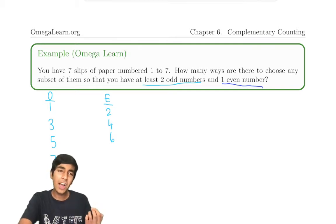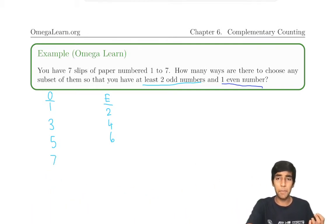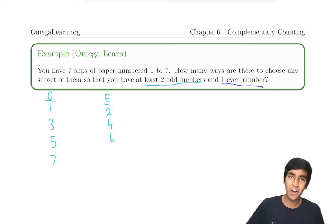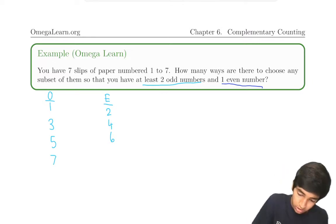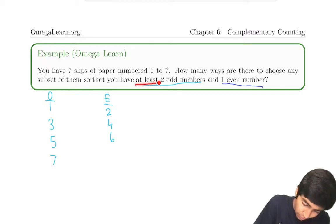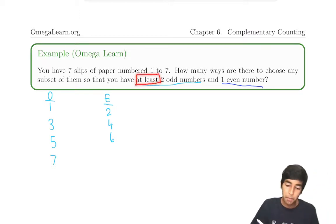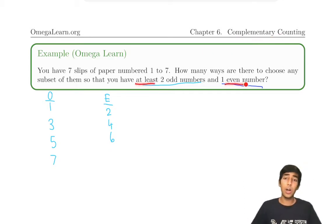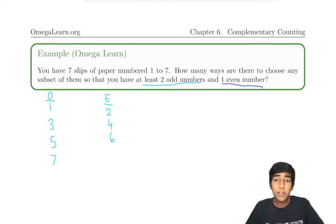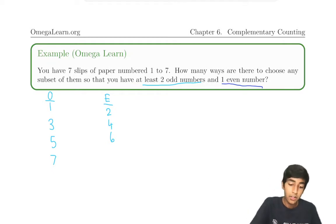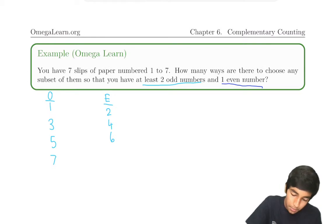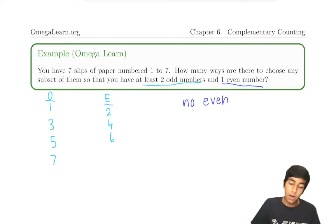Can we maybe find something simpler — a simpler solution using complementary counting? It says 'at least,' and 'at least' is actually a really good keyword to use complementary counting. So if the subset must have at least one even number, what is the opposite of that? No even numbers. So no even numbers is the opposite of at least one even number.